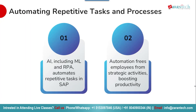SAP Business AI integrates cutting-edge AI technologies like machine learning and Robotic Process Automation (RPA) to streamline operations within the SAP ecosystem. It liberates employees from monotonous tasks, enabling them to channel their efforts into strategic endeavors and value-added work. This automation enhances productivity, efficiency, and cost-effectiveness throughout the organization. By automating routine processes, SAP Business AI optimizes operations, minimizes manual intervention, and fosters a more agile and competitive business environment.